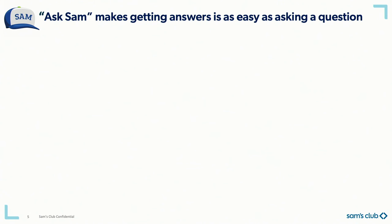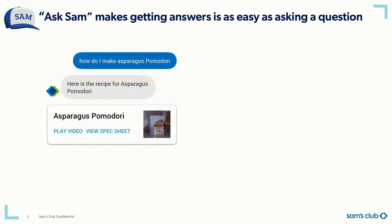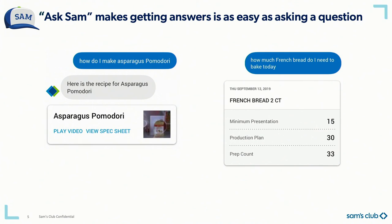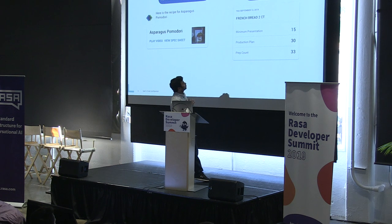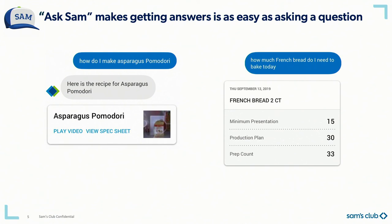Let's look at more use cases related to recipe preparation. If associates are looking for a recipe, they can ask how to make an asparagus recipe, and it will show them the recipe preparation video on the spec sheet. One more use case: if they are looking for preparation for French bread for today, they can ask how much French bread do I need to bake today, and it will show the prep plan and prep count for the French bread. These are just a few use cases that Ask Sam can answer out of many.